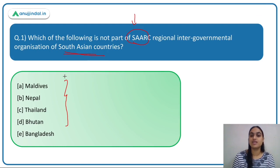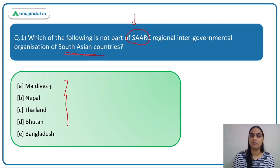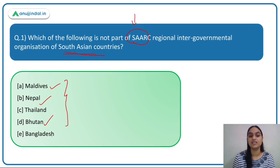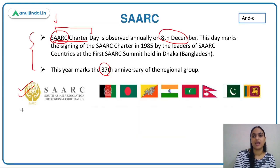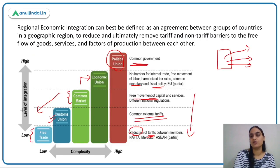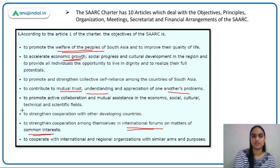Coming back to the question: Maldives is a part of SAARC, Nepal is, Bhutan is, Bangladesh is — but Thailand is not one of the participating nations. So the answer is option C, Thailand.